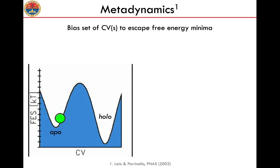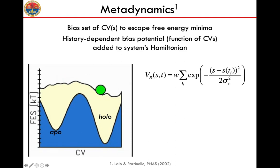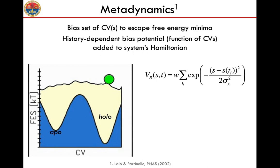The method is based on metadynamics, a technique developed by Laio and Parrinello in 2000 in order to force escape from free energy minima. This is achieved in metadynamics by adding to the system a history-dependent potential that is a function of the so-called collective variables — metacoordinates that are added in the collective variable space to the conformations visited by the system. In this way you discourage the system from revisiting already sampled conformations and you force the exploration of phase space.